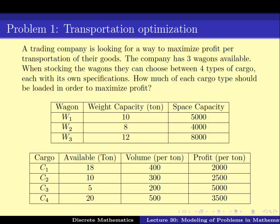The first problem that we looked at in the last video is finding the best way of loading three wagons using four different kinds of cargo, when we have a restriction on the weight each wagon can carry and the space that each wagon can carry.